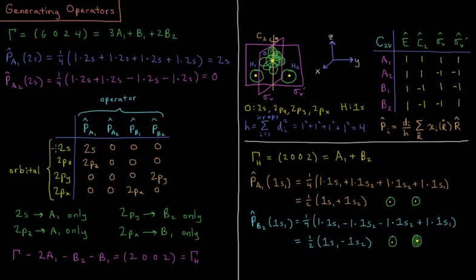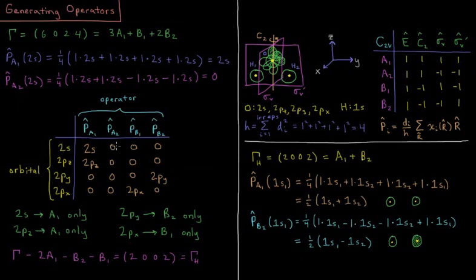For example, if we look at the 2S orbital of our oxygen and we use the A1 projection operator, the result we get back is just the 2S orbital. If you apply the A2 projection operator to this 2S orbital, you get 0, same thing for B1 and B2. That's because the 2S orbital of oxygen is A1 in character.